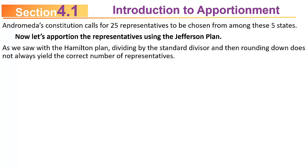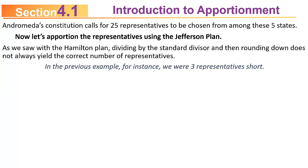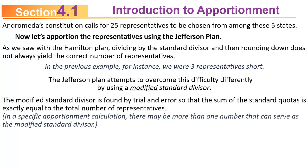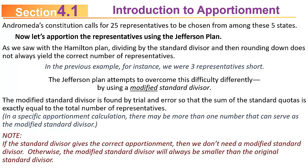As we saw with the Hamilton plan, dividing by the standard divisor and rounding down does not always yield the correct number of representatives — in the previous example we were three short. The Jefferson plan attempts to overcome that problem by using a modified standard divisor, found by trial and error. You keep adjusting until the sum of the standard quotas equals exactly the required number of representatives. The modified standard divisor is generally smaller than the original.